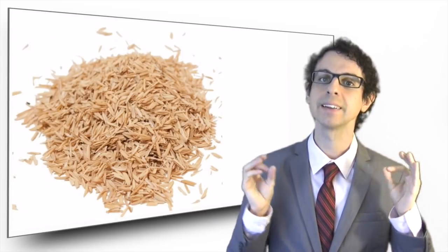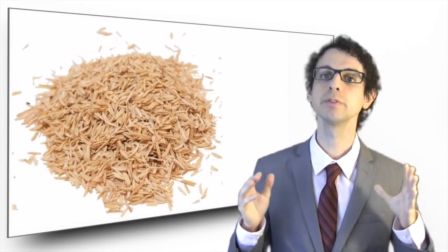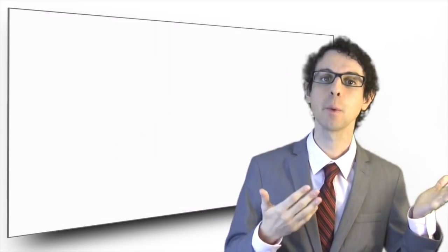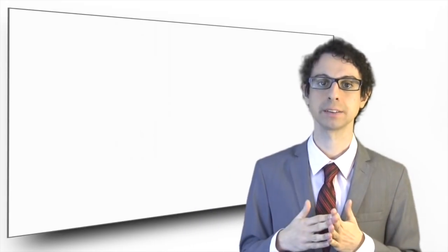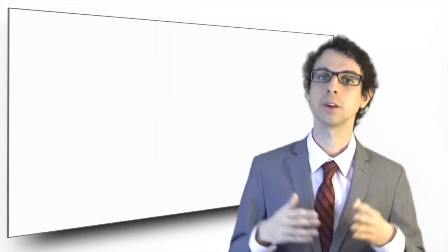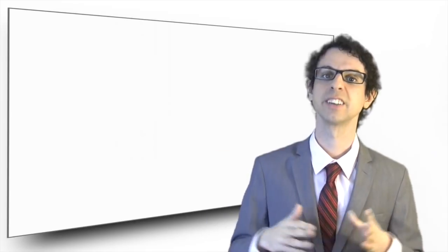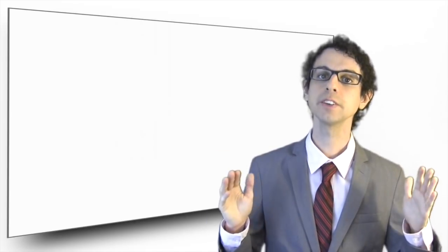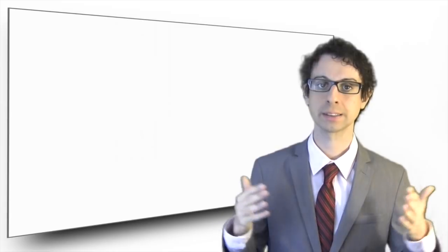With this information, Eijkman set up a very elegant experiment. He took a group of chickens and fed half of them white polished rice and the other half brown unpolished rice. The chickens fed refined rice all developed beriberi and died very soon, while none of the chickens fed whole rice contracted the disease.